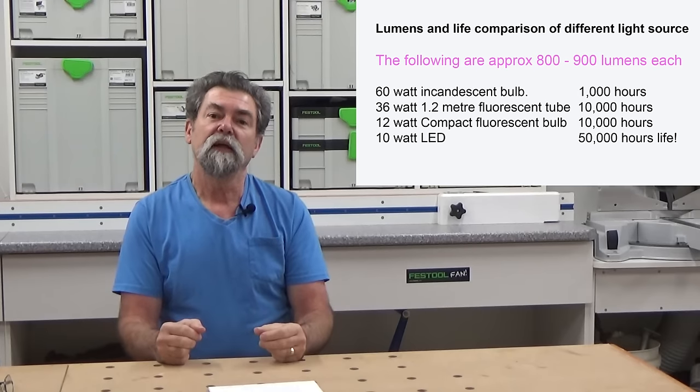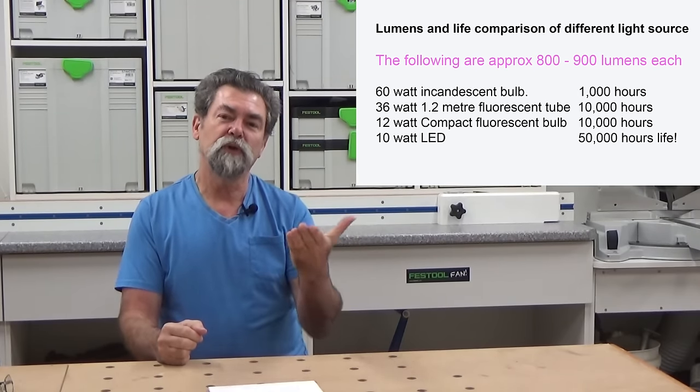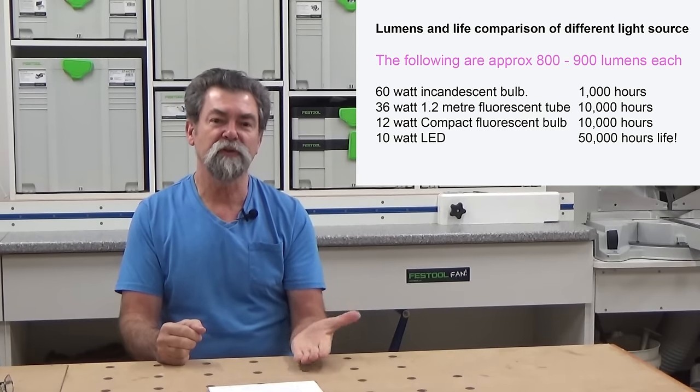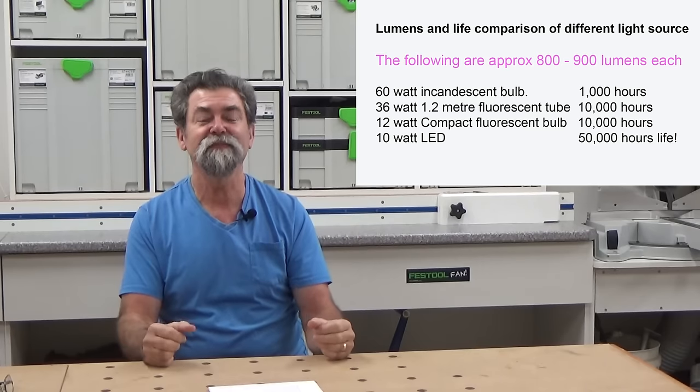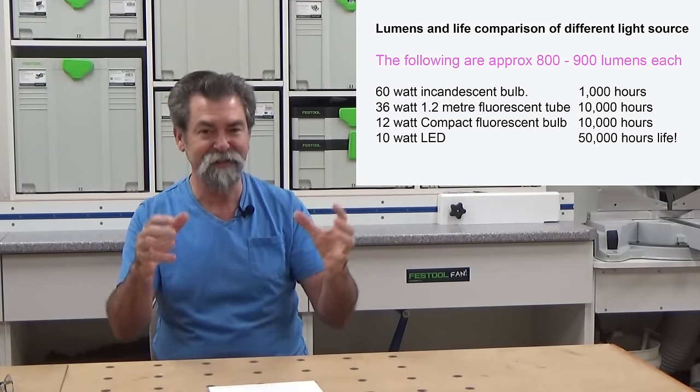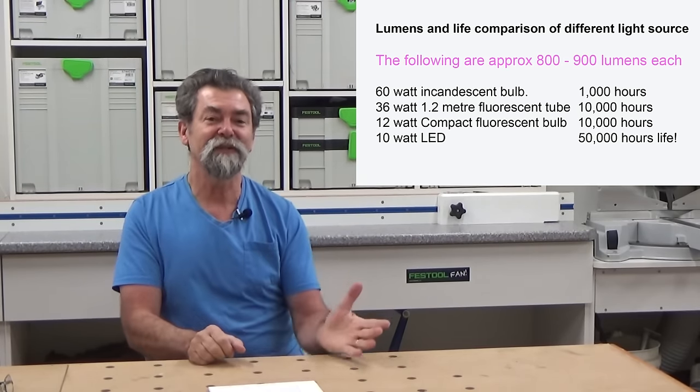All right, because we're going through changes of different types of light that are available now we're into LED lighting. They looked at it and thought, well we should really show some comparisons to how many lumens and that's the intensity, how bright a light is, not the color, just how bright it is. I'm not going to go into the science of a lumen.